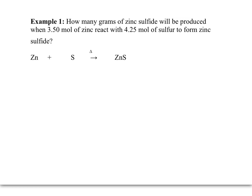Let's take a look at some examples. How many grams of zinc sulfide will be produced when 3.5 moles of zinc react with 4.25 moles of sulfur to form zinc sulfide? You can see that the amounts for each of the reactants is given. So you need to determine which one is the limiting reactant, which one are we going to run out of, and then which one is the excess reactant, which one is going to have some remaining after the reaction is complete.